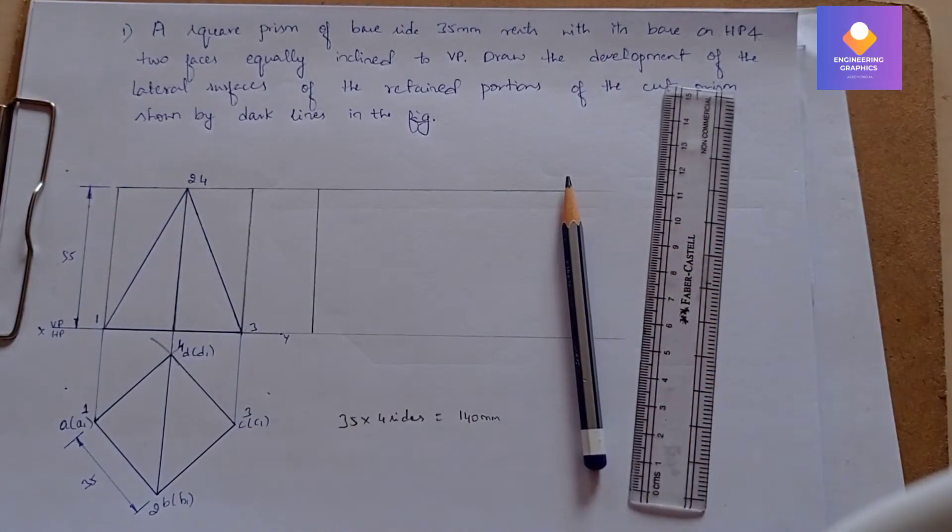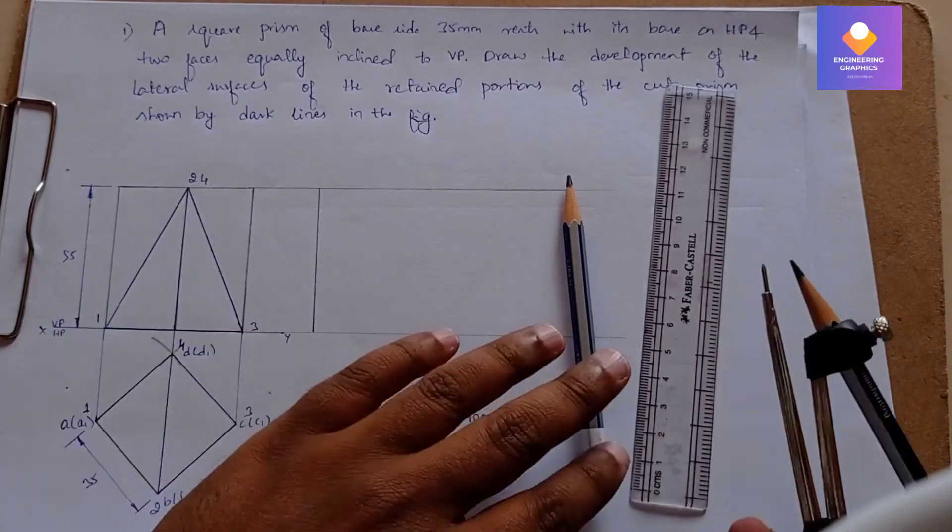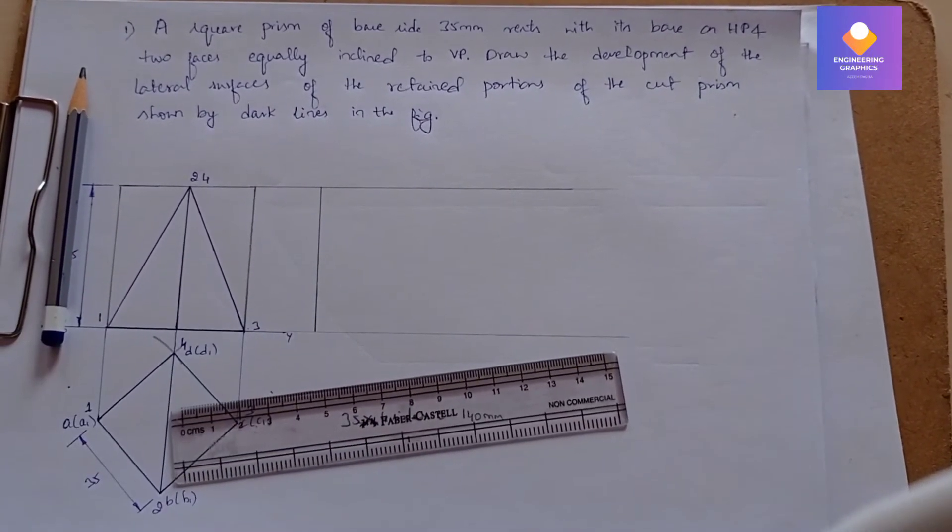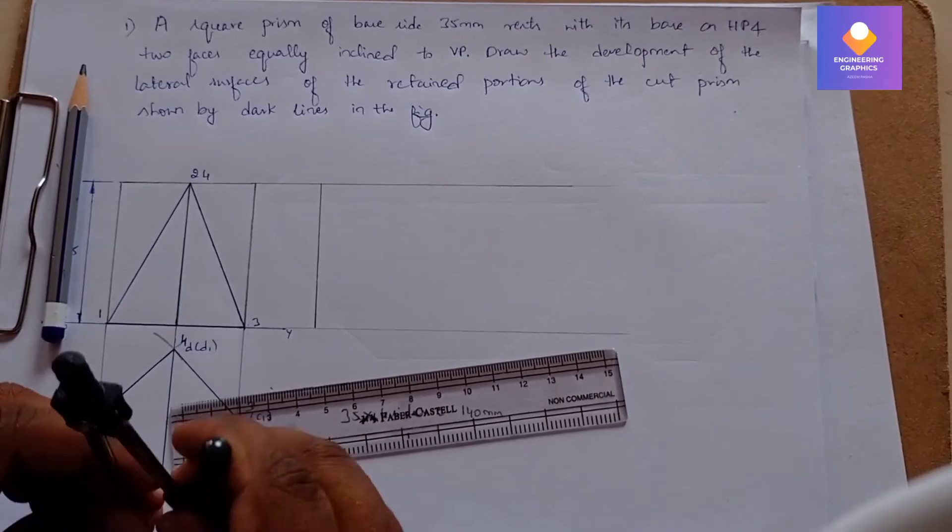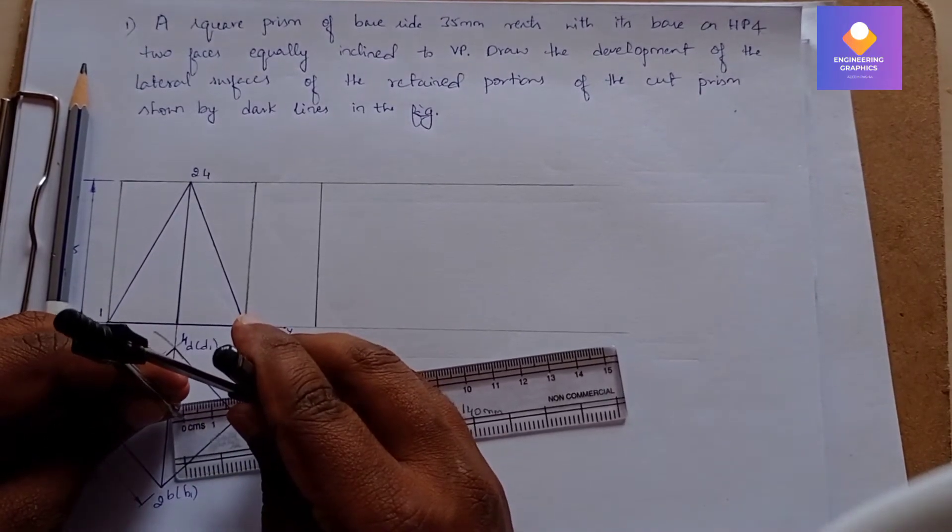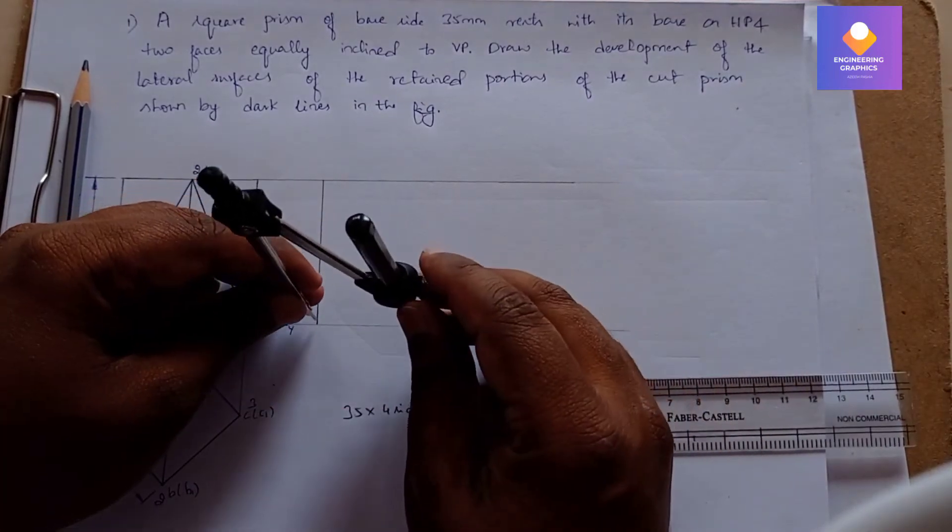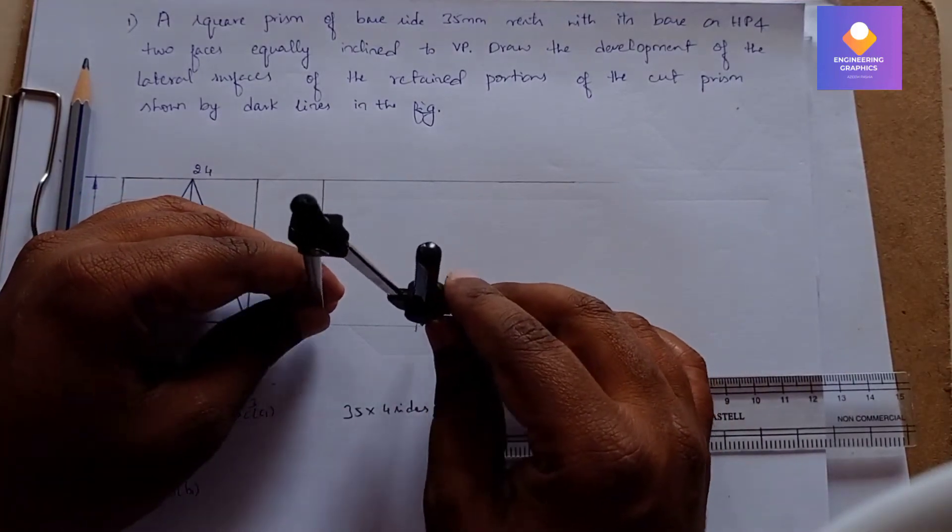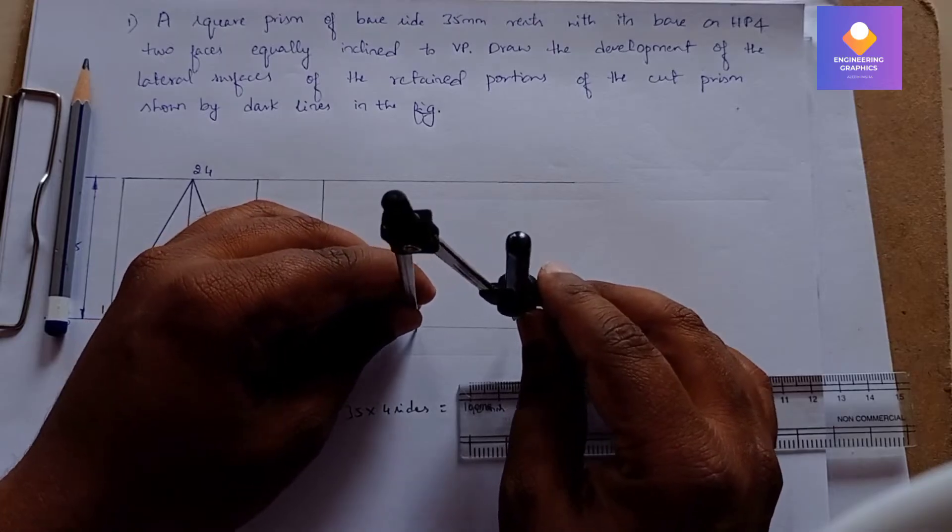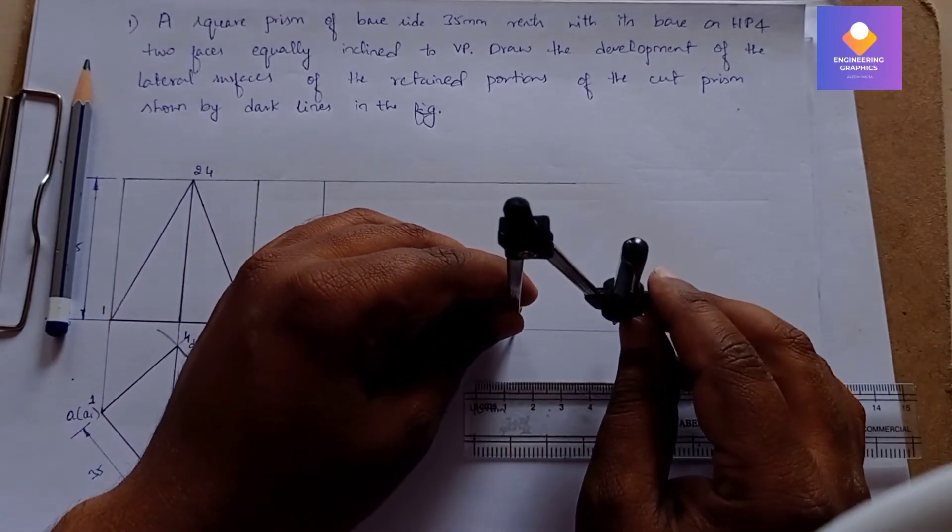You can see it is having four sides, and each of the sides is 35mm. You can measure from the scale or measure the same length from the top view of the first diagram. You need to measure 35mm and cut four arcs.